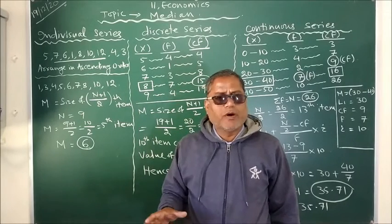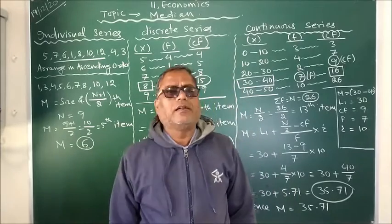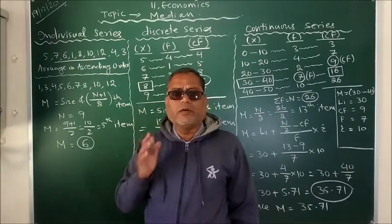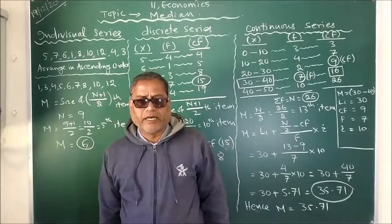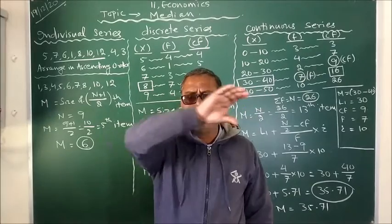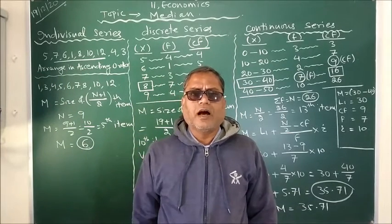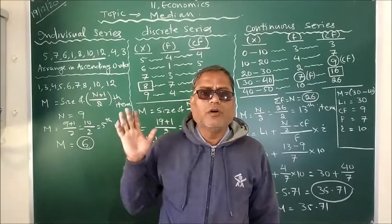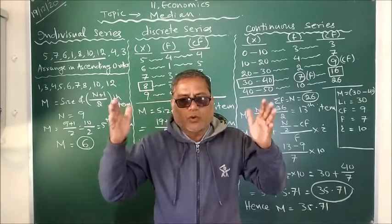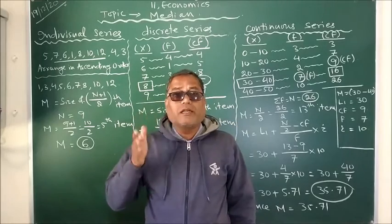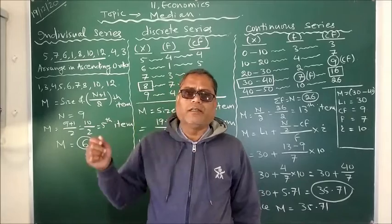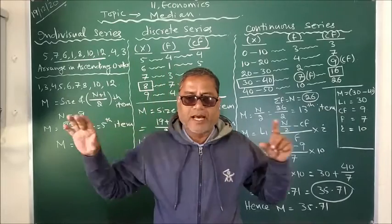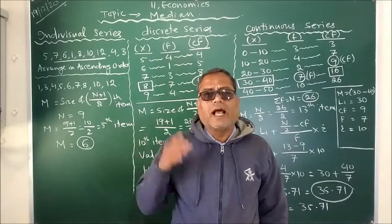That is individual series where we find ungrouped data, and discrete and continuous series which are grouped data. First we need to understand what is the characteristic of median. When the values of an observation are arranged in ascending or descending order — that is the main thing. We need to remember that after getting the question, first of all we have to check whether the values of the series are arranged in ascending or descending order or not. If not, we need to first arrange the values in ascending order.